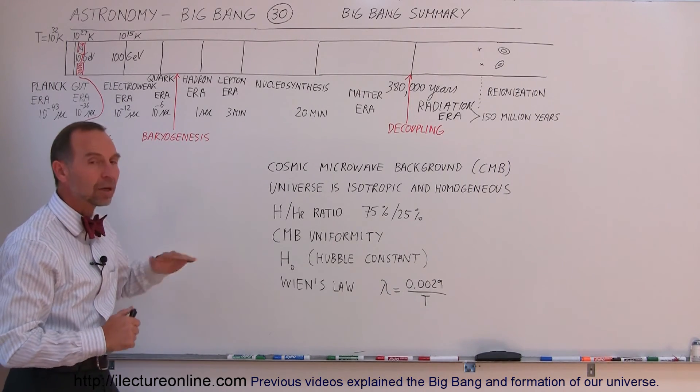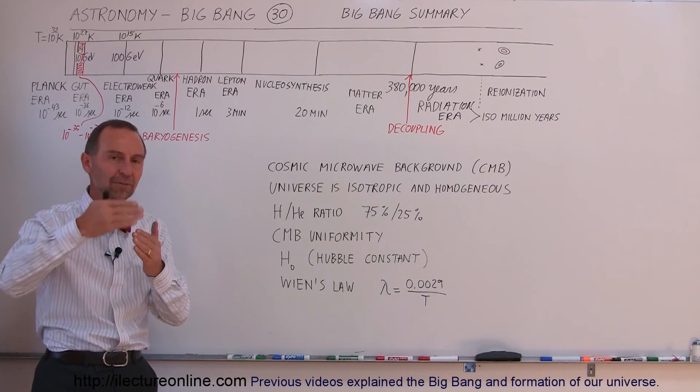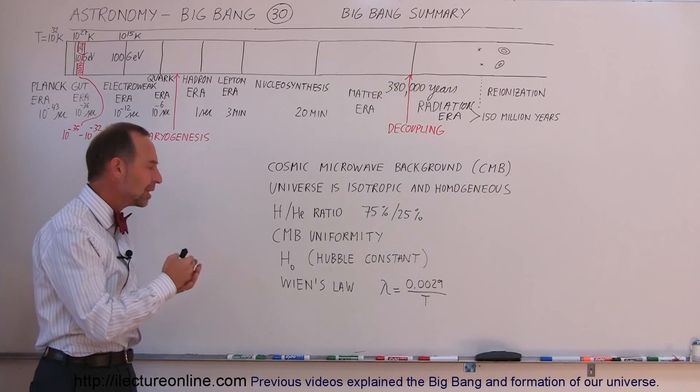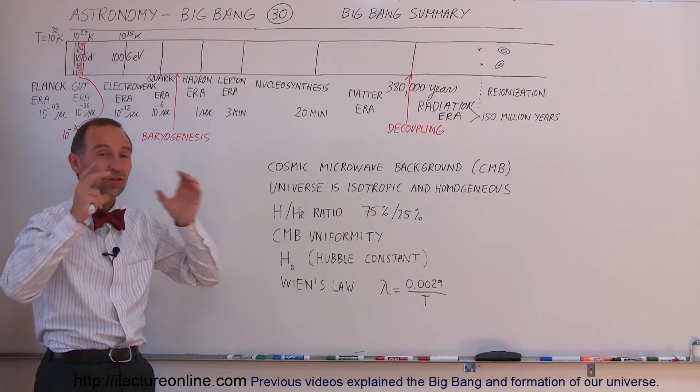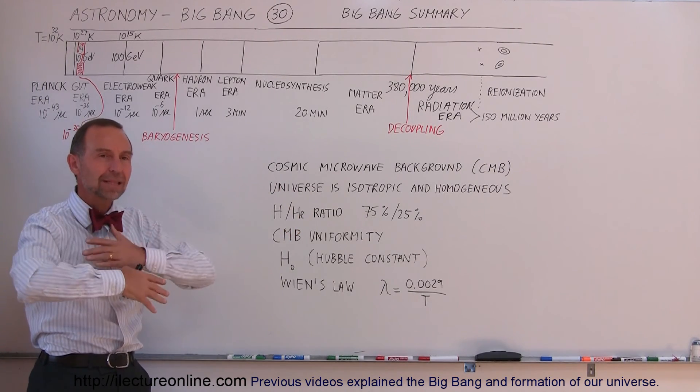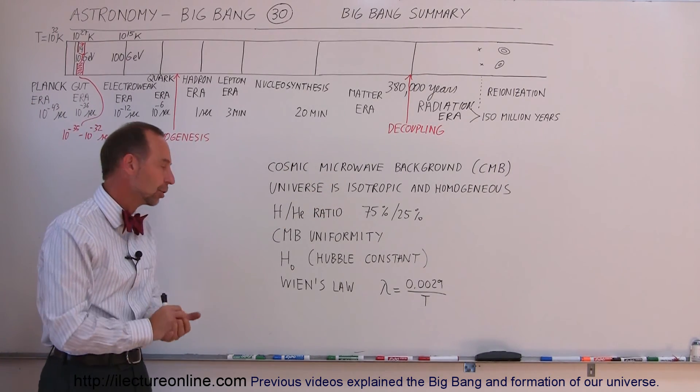We also understood now what the Hubble constant is telling us, that we know that the Universe is expanding at a very specific rate today, about 73 kilometers per second per megaparsec, and that causes the whole Universe, space itself, to be expanding at a uniform rate everywhere throughout the Universe, just like it had been doing at the very beginning of the Universe.